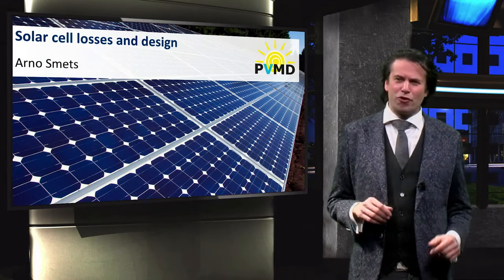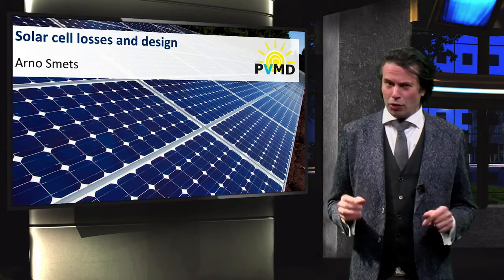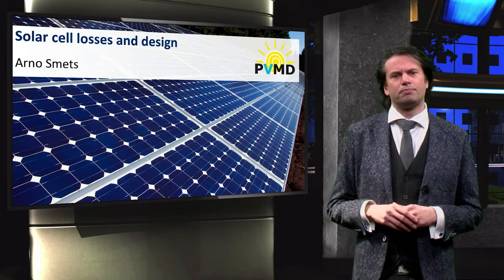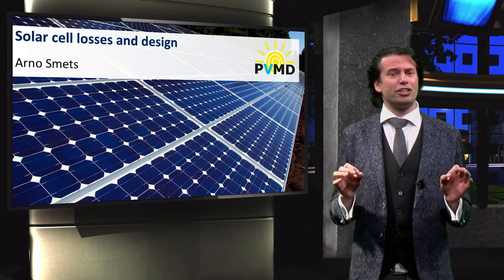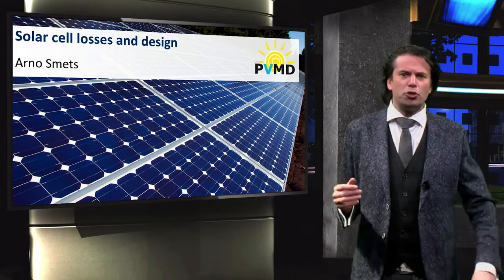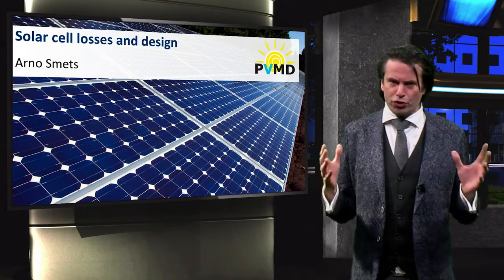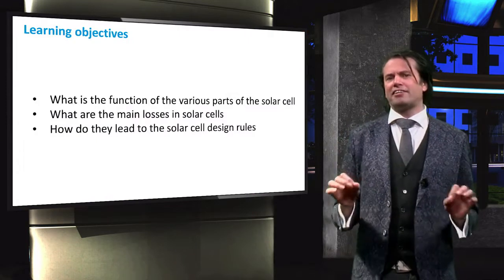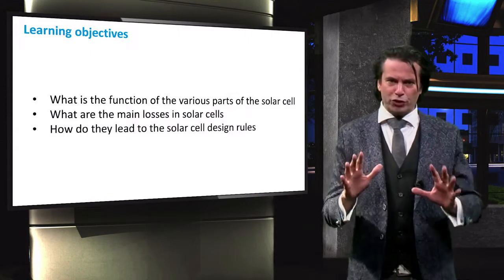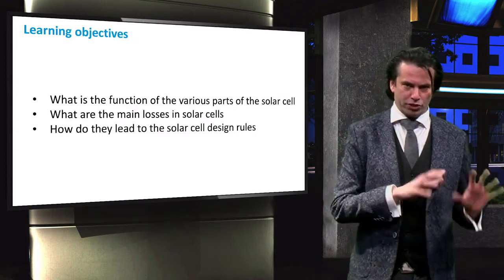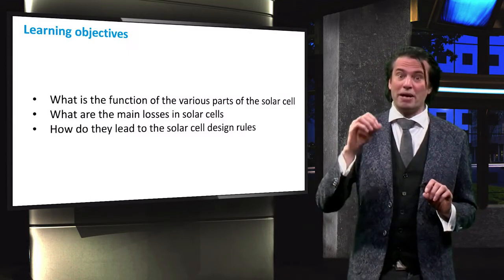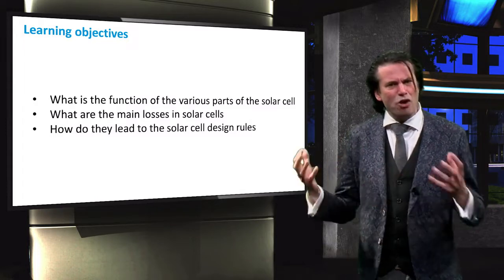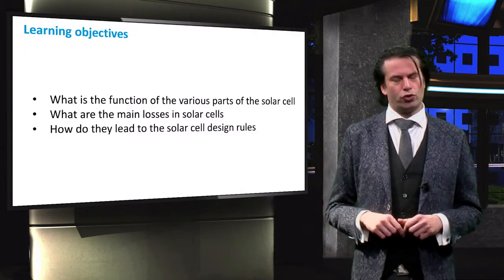In this final introduction video on photovoltaic energy conversion, we will discuss the various parts of a solar cell and the losses that occur in a solar cell. The losses in solar cells will provide an important framework to put everything we learn over the next couple of weeks in context. The learning objectives for this video are to understand the main function of the various parts of a solar cell, discuss the main losses that occur in solar cells, and understand how these losses lead to the design rules for solar cells.